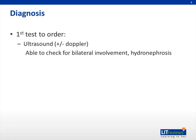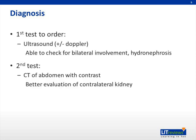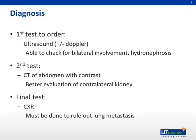The first test to order is an ultrasound with or without Doppler — a painless, radiation-free, and relatively inexpensive test. Ultrasound helps assess the contralateral kidney, look for hydronephrosis, and evaluate the IVC. The second test is a CT of the abdomen with contrast, which better evaluates the contralateral kidney and examines lymph nodes for staging. The final test is a chest X-ray, which must be done to rule out lung metastasis, as Wilms tumor spreads to the lung and liver.